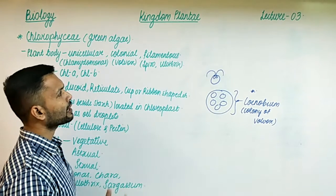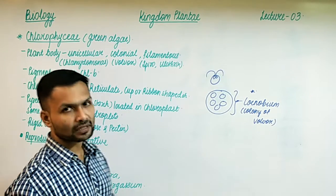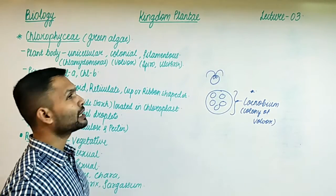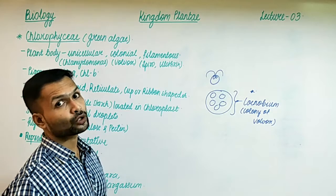We also have Spirogyra, Ulothrix, and Chara as examples of filamentous and branched forms.